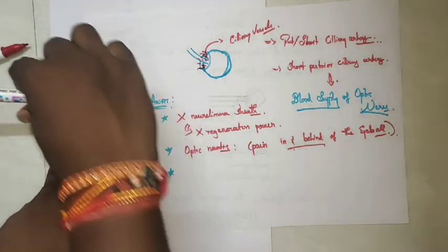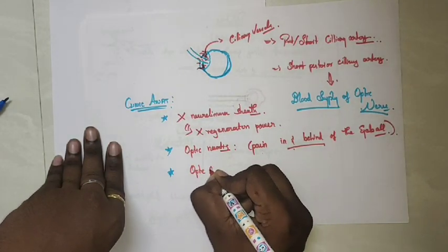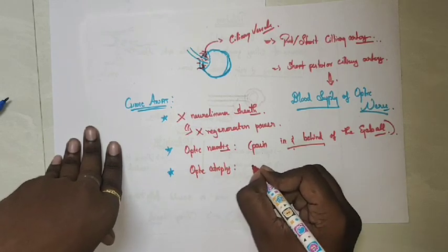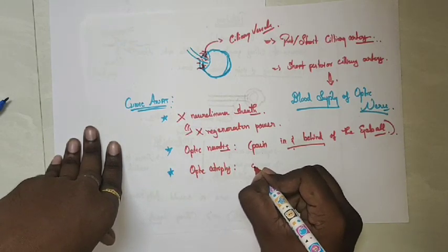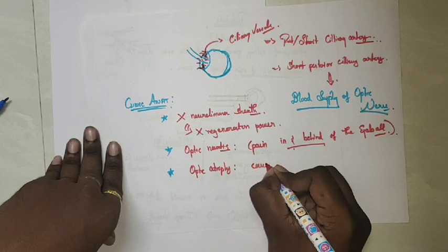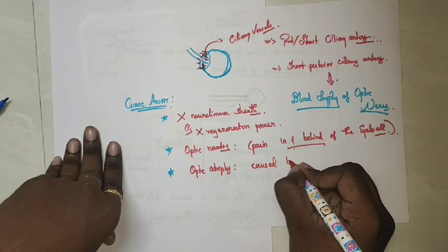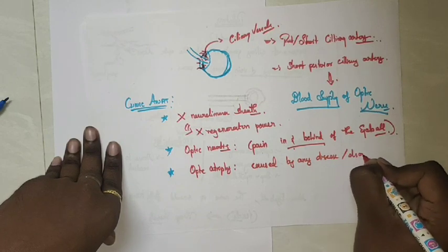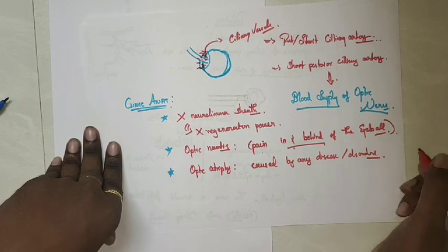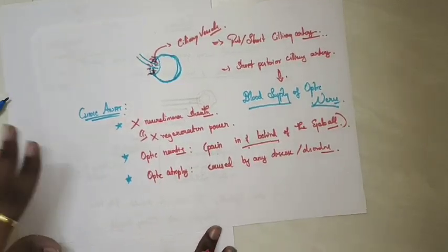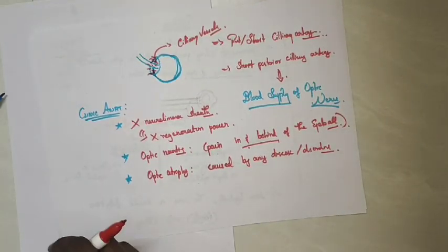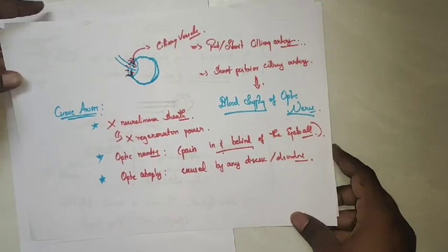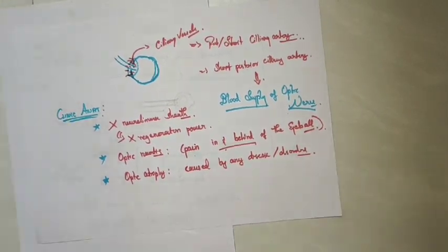Optic atrophy is another clinical condition which can be caused by any disorders or disease. That concludes the anatomy of the optic nerve. If you have any doubts, you can post them in the comment section and we'll reply at the earliest. Thank you.